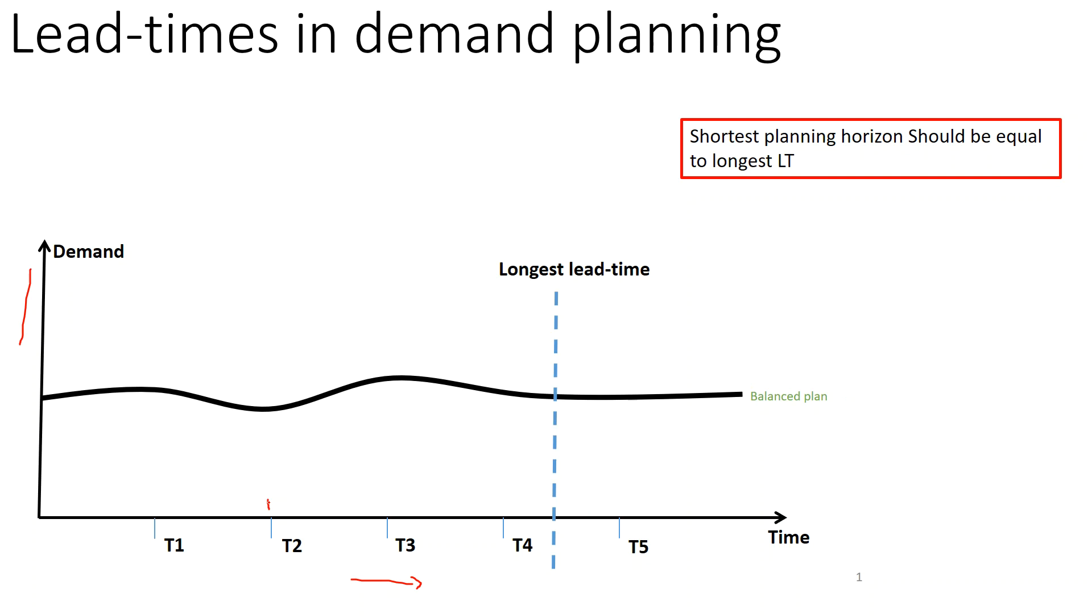Now if there is a demand change, there can be a demand drop or a demand increase. I'll explain the impact of lead time. The fundamental step for any demand planning is that your shortest planning horizon should be equal to your longest lead time. That is the fundamental. For example, if your longest lead time is four weeks, then your minimum planning horizon should be four weeks.